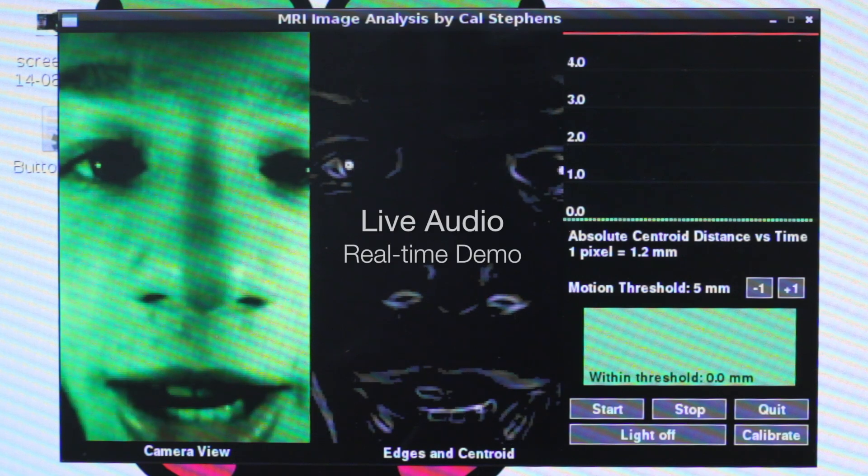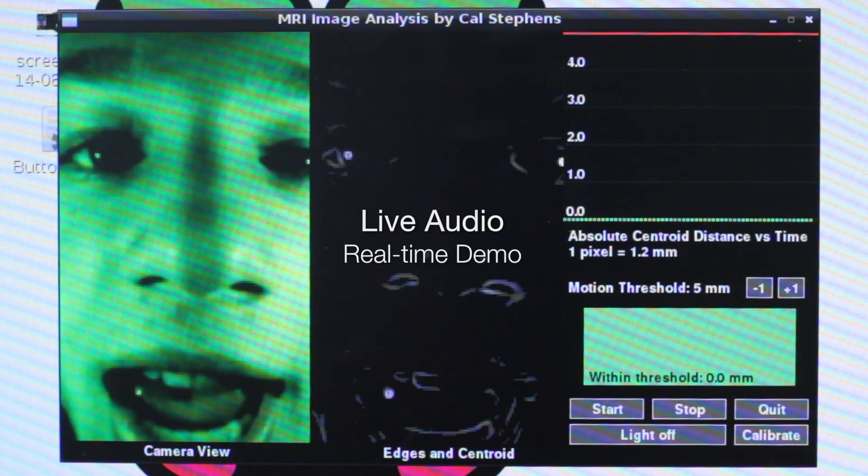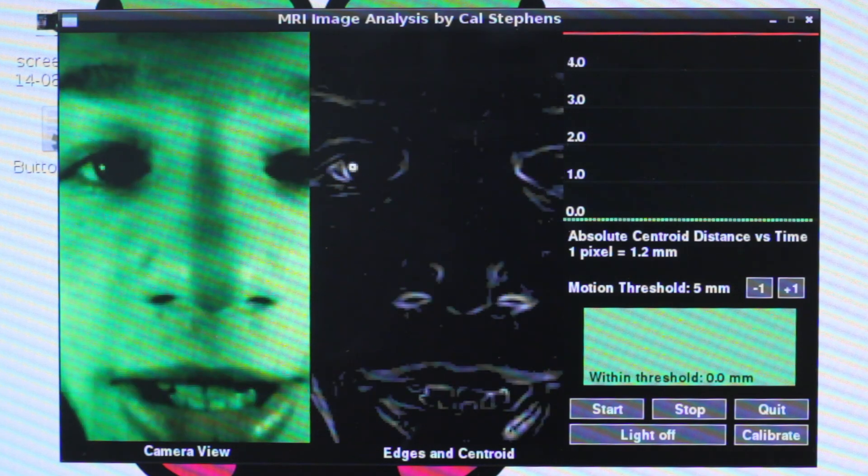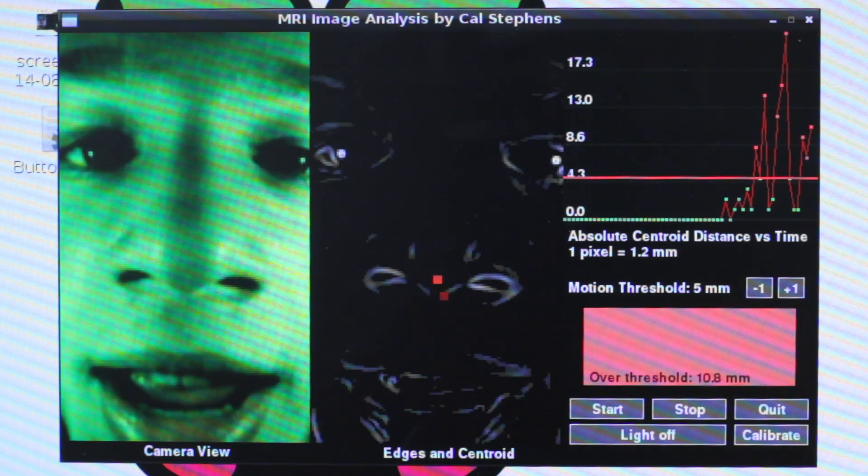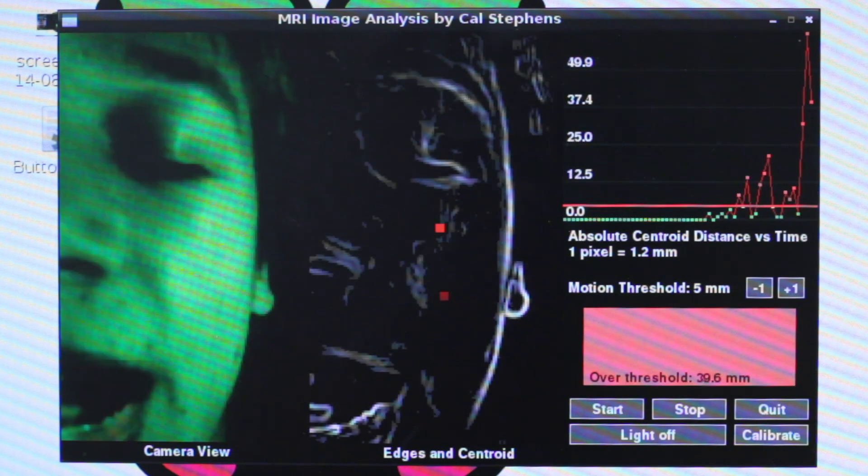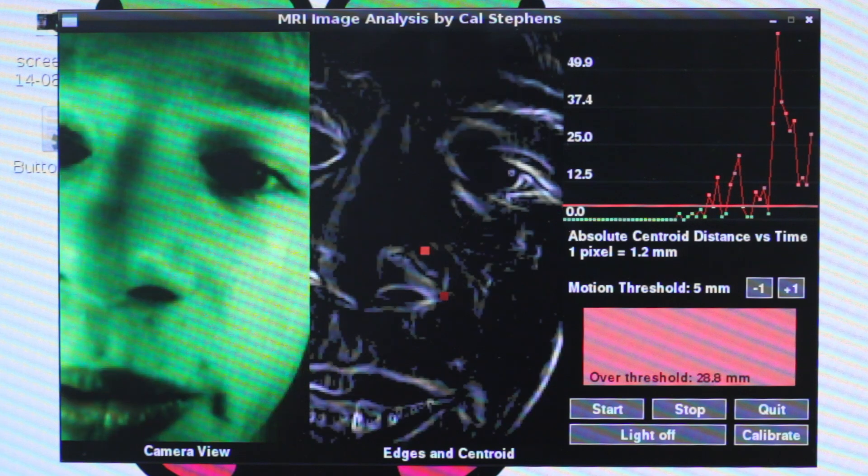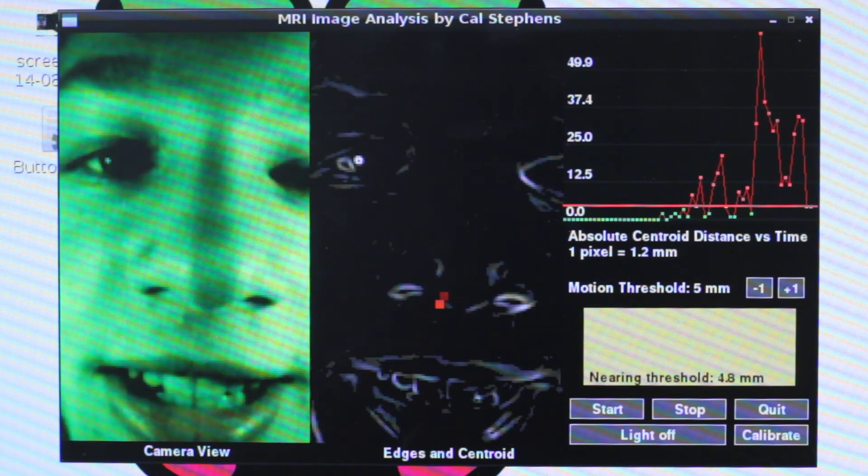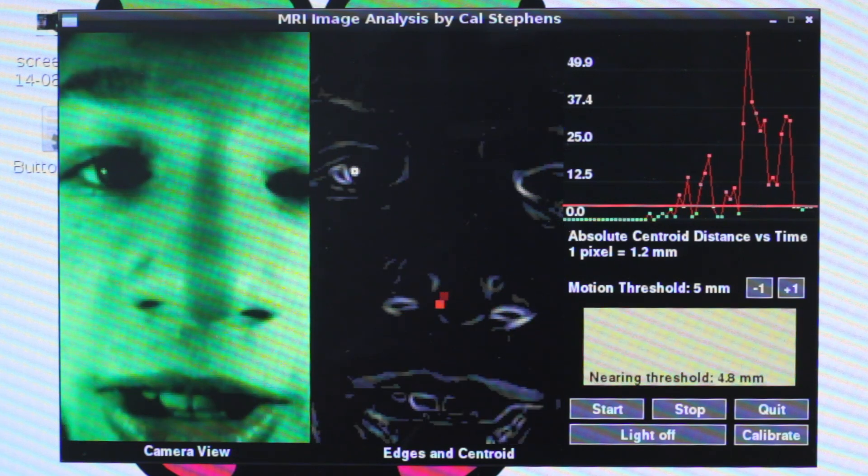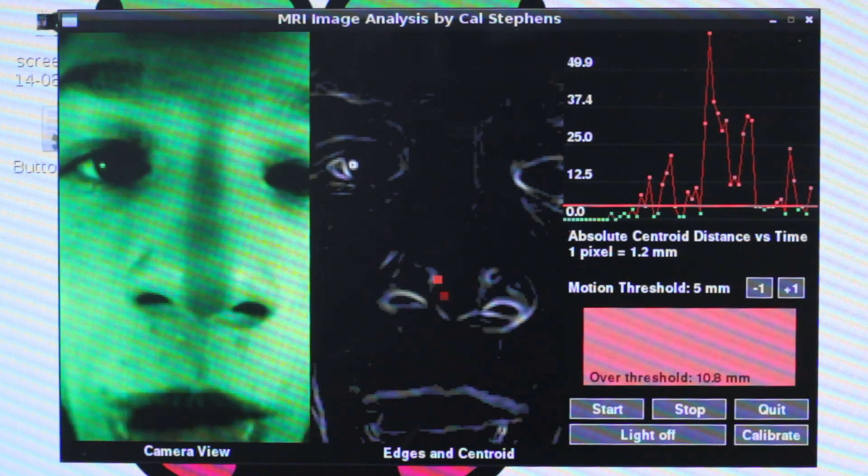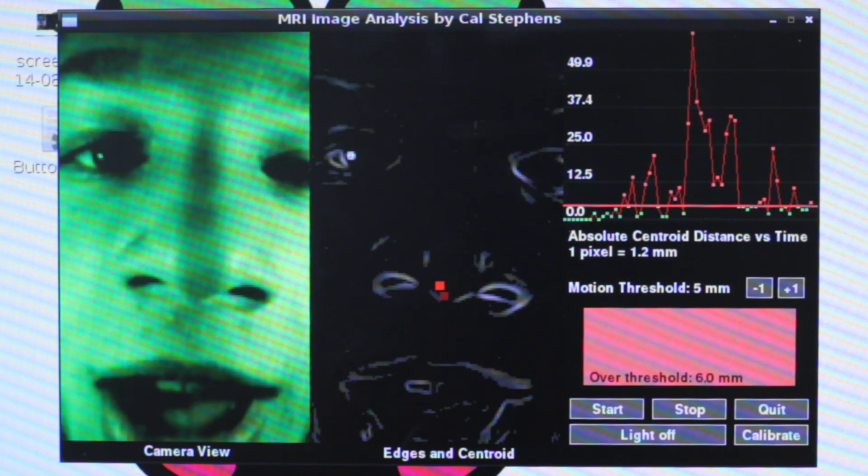The child's image is on the left side of the screen and the edges of their image is in the center. We use those edges to track the motion of their face around the frame. As you can see, as I move my head around the edges move and the red dot in the center moves with them. We use that center dot to graph their motion. We have it related to millimeters right now. One pixel of the image is correlated to 1.2 millimeters of actual distance.